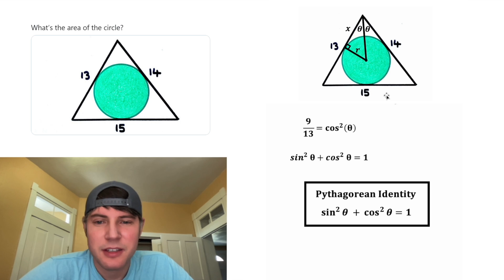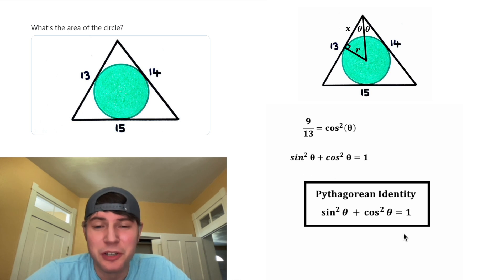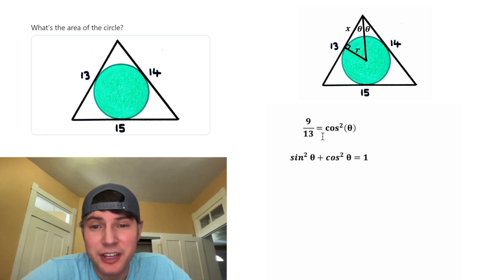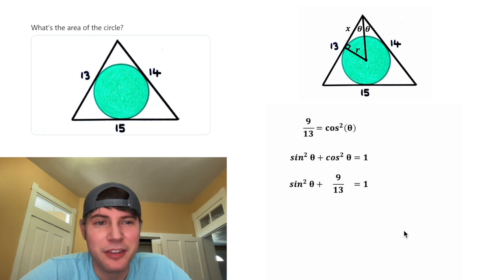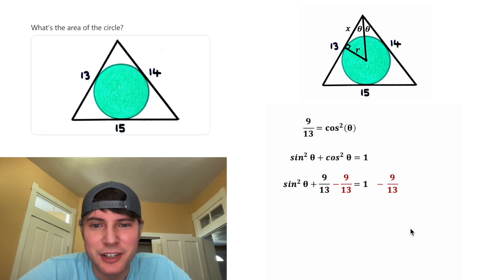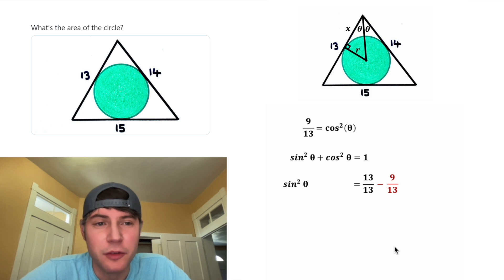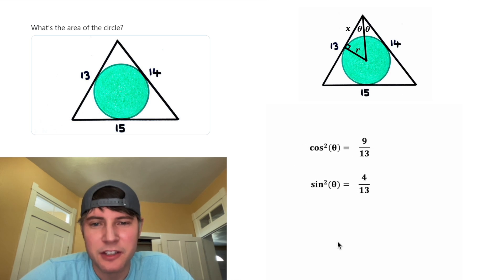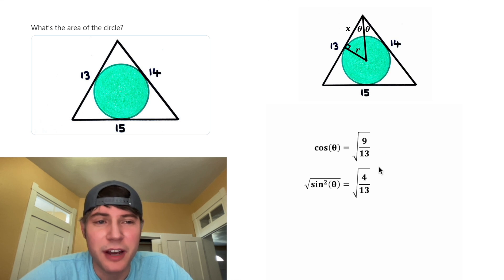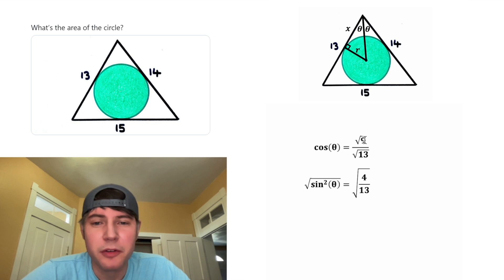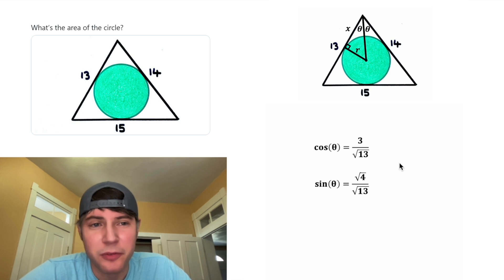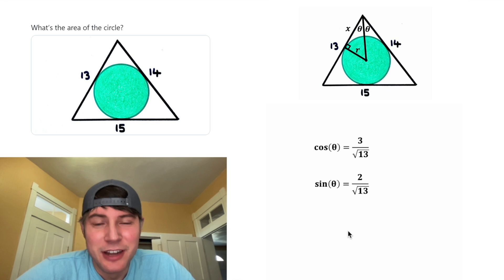Next we use the Pythagorean identity: sine squared theta plus cosine squared theta equals one. Substituting cosine squared theta equals 9/13, we subtract 9/13 from both sides. The 9/13s cancel on the left, and on the right 13/13 minus 9/13 equals 4/13, so sine squared theta equals 4/13. Taking square roots of both equations: cosine theta equals 3 over root 13, and sine theta equals 2 over root 13.